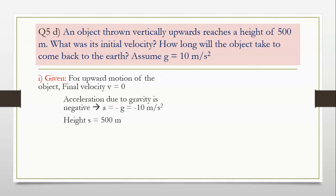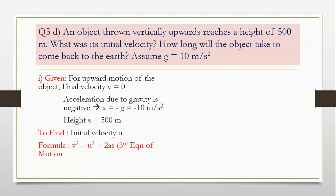I have divided this sum into two parts because there have been two questions asked: to find out initial velocity u. What is the formula? V square is equal to u square plus 2as — that is the third equation of motion. Why are we using this? Because we do not know the time taken.